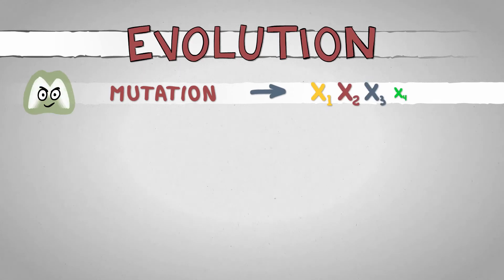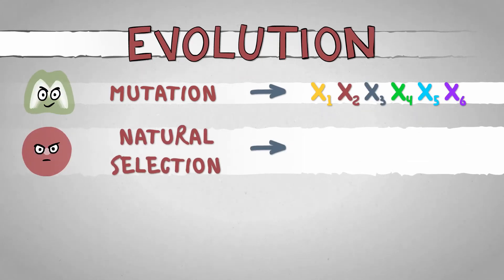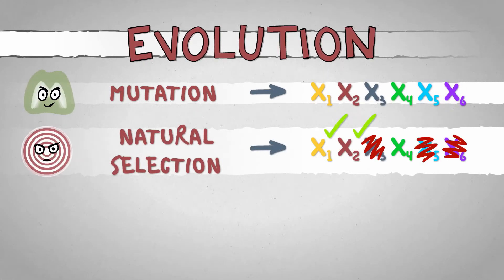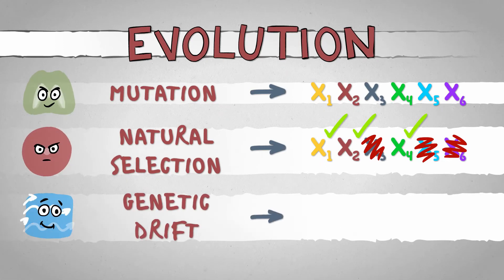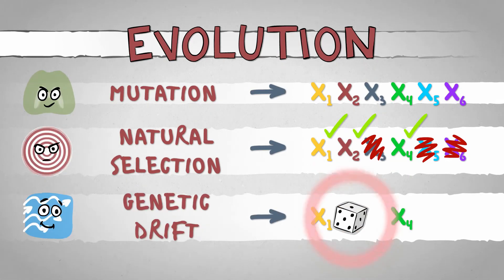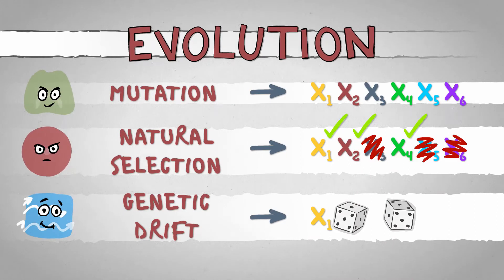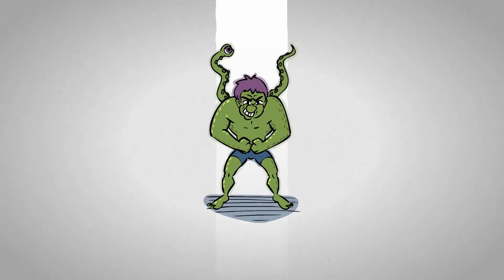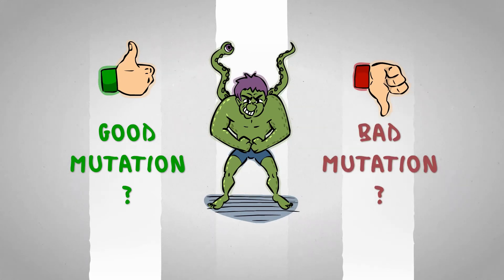Mutation randomly generates new genes and alleles, and nature tosses out the bad ones while keeping the good ones. Genetic drift flavors the process with an element of luck, so no allele can ever feel safe. But what makes a mutation beneficial or detrimental? There's no formula for that, it all depends on the environment.